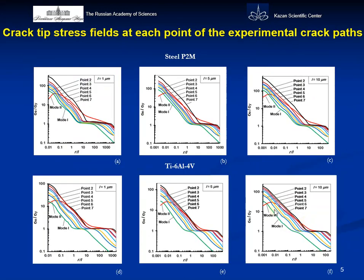First of all, I would like to show the distribution of equivalent stresses along the crack extension as a function of the material scale parameter. The stress values are normalized by the yield stress of the material under consideration. The figures show, for example, stress distributions for steel R2M and titanium alloys. These graphs illustrate the behavior of the normalized effective stresses for R2M steel and titanium alloys at each point of the experimental crack path for initial pure mode 2 and subsequent mixed-mode fracture. The numerical results confirm the presence of the effect of the intrinsic material length parameter on the crack-tip effective stresses' distributions according to the gradient theory of plasticity.